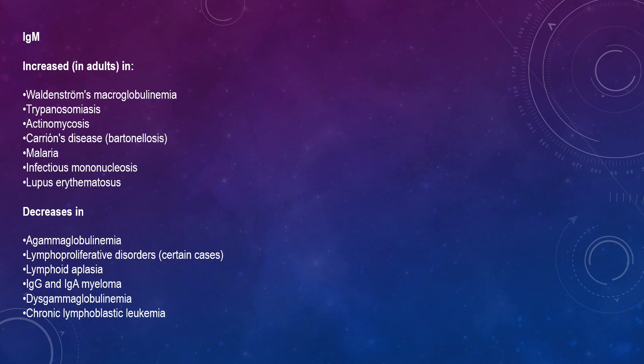Diseases in which IgM is increased include Waldenström's macroglobulinemia, trypanosomiasis, actinomycetosis, Carrion's disease, malaria, infectious mononucleosis, and lupus erythematosus. IgM is decreased in agammaglobulinemia, lymphoproliferative disorders, lymphoplasia, and IgA and IgG myeloma.